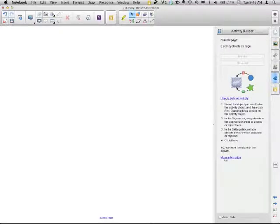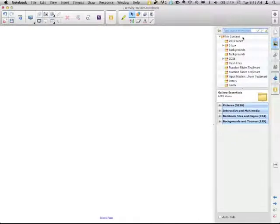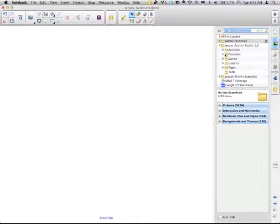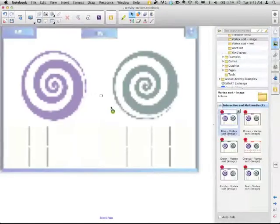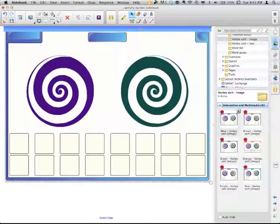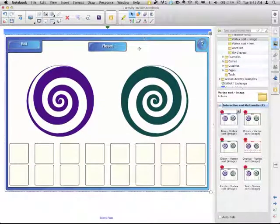Four steps and then more information. If you've used Notebook before, you might know about the Vortex sort. The Loved or Hated Vortex sort. You can have one for text or image. This is for images.